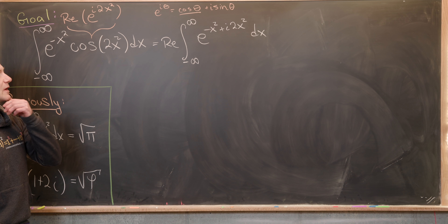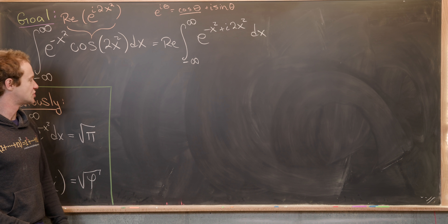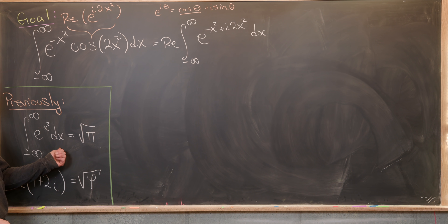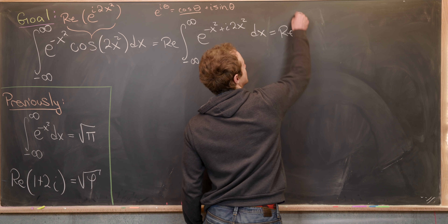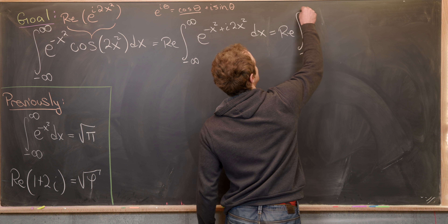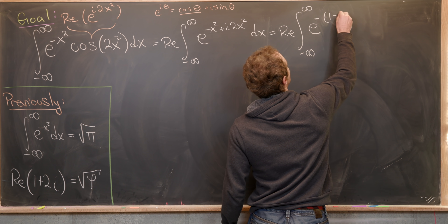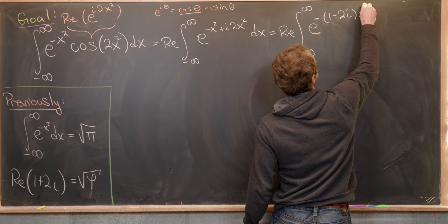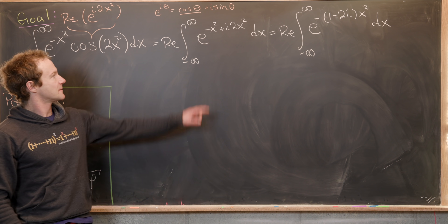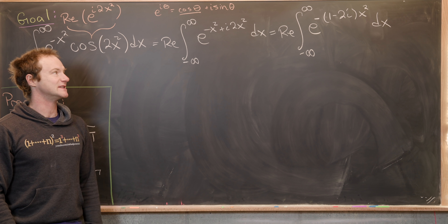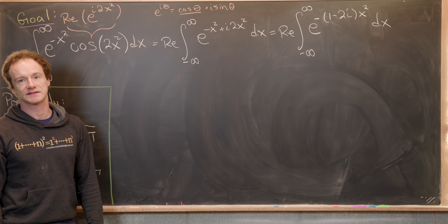Next, I want to factor a minus sign out of the exponent, just to put it more in line with the Gaussian integral form. That gives us the real part of the integral from minus infinity to infinity of e to the minus 1 minus 2i times x squared dx — in the exponent, I factored a minus 1 out of the left-hand side and an x squared out of the right-hand side.